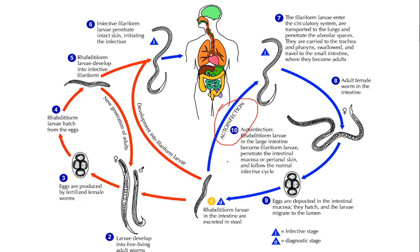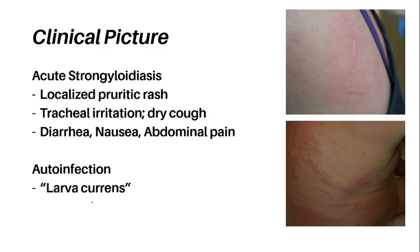Now let's discuss the clinical picture of strongyloidiasis. The initial sign of acute strongyloidiasis, if noticed at all, is a localized pruritic rash at the site of penetration of the filariform worm. As the worm makes its way into the lungs, patients may develop tracheal irritation accompanied by a dry cough. After the larvae make their way into the GI tract, diarrhea, nausea, abdominal pain, and constipation may occur.